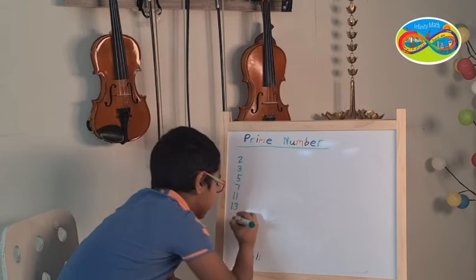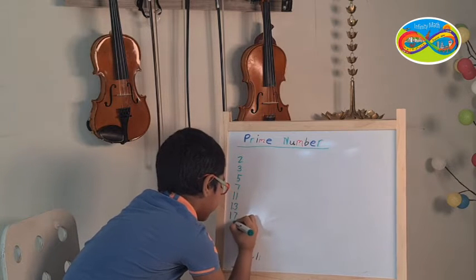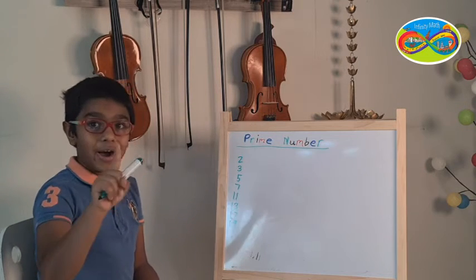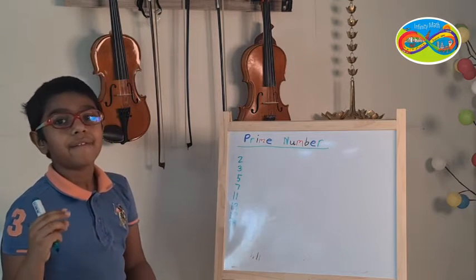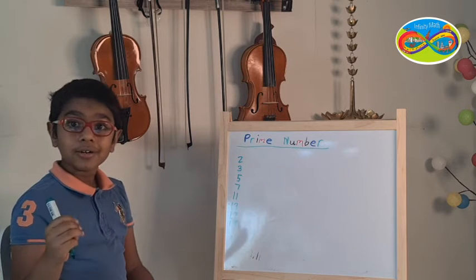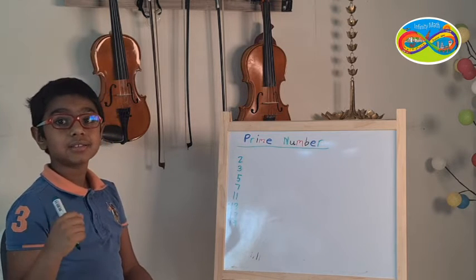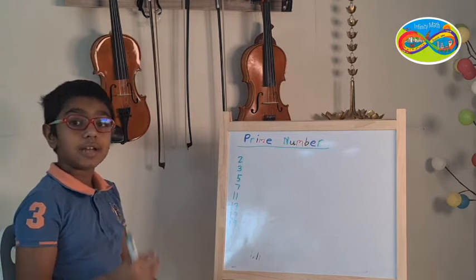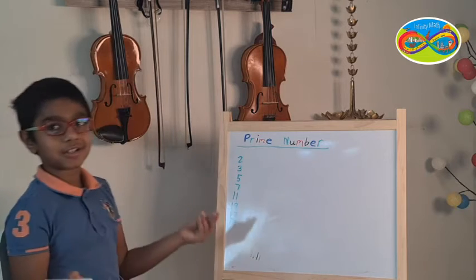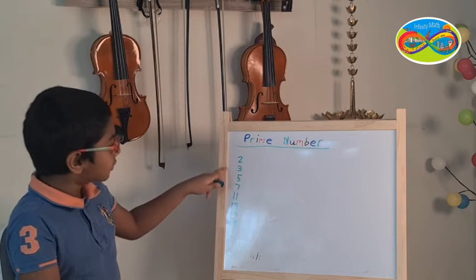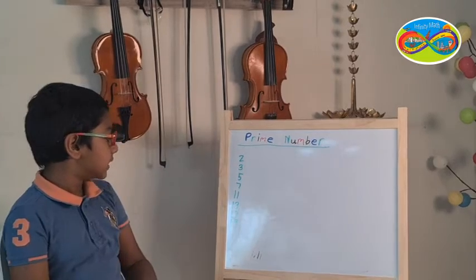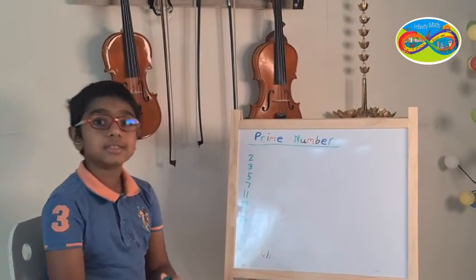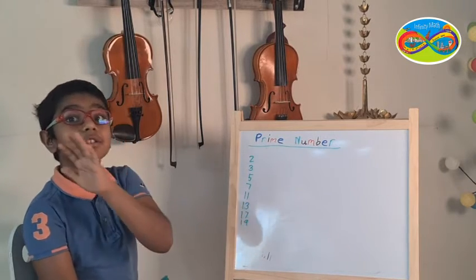Then 17, yes. 19, yes. But not 20. 20 has 1, 2, 4, 5, and 10, and 20. So no. It has much more factors. So 2, 3, 5, 7, 11, 13, 17, and 19 are all the prime numbers from the smallest one to 20.